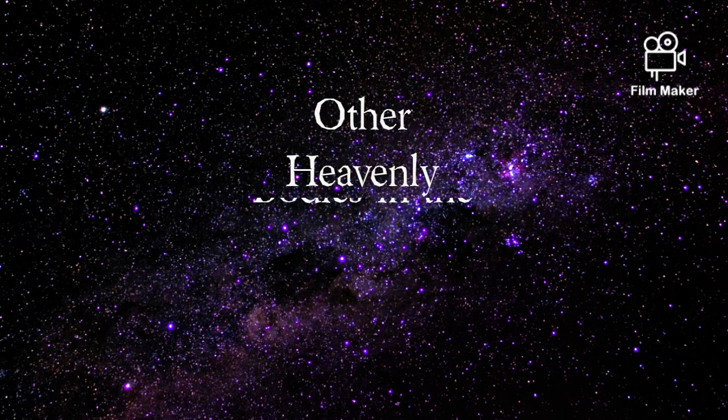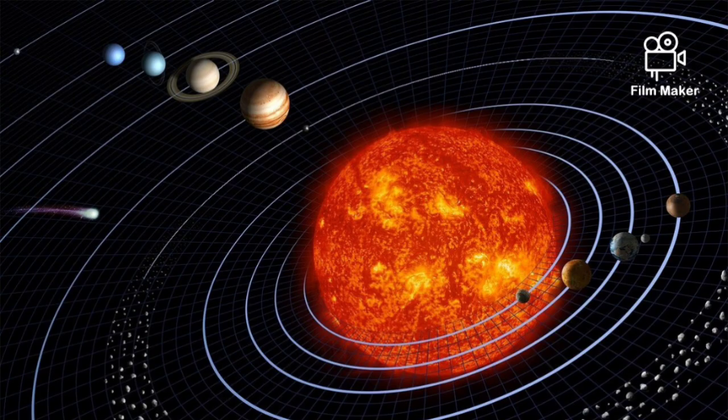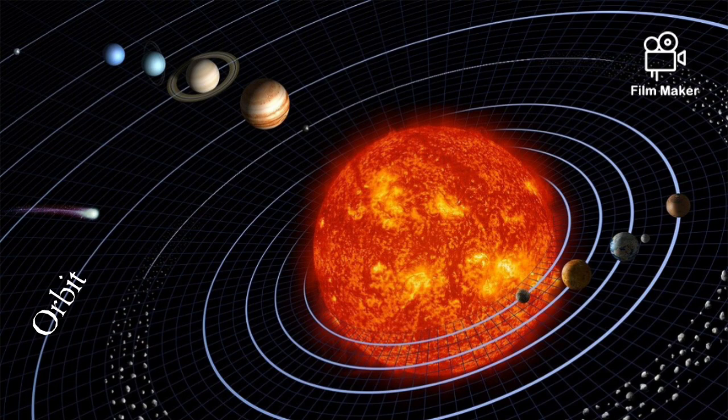Today we will learn about other heavenly bodies in the solar system. Every planet in the solar system revolves around the sun along a specific path. This path is known as orbit.